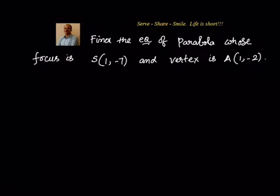Find the equation of a parabola whose focus is at (1, -7) and vertex is at (1, -2). To solve this, we will try to do a rough graph of this.